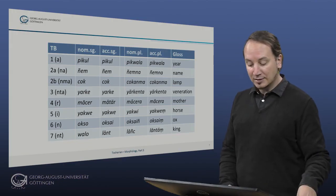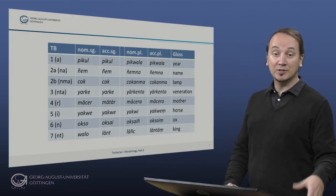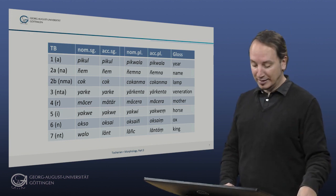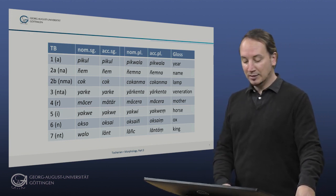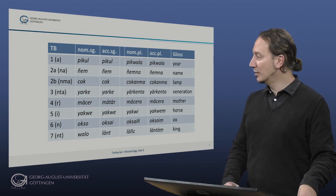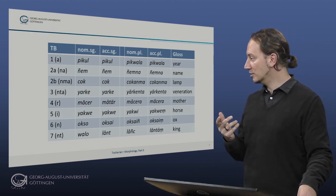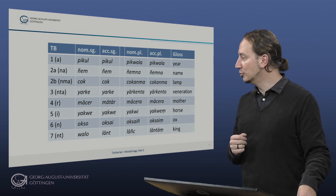Class 2B, the -ma class, represented by cok 'lamp', cokamma in the plural. The -ṃṭ class here represented by yarke 'veneration', and we have the plural yurkenta.